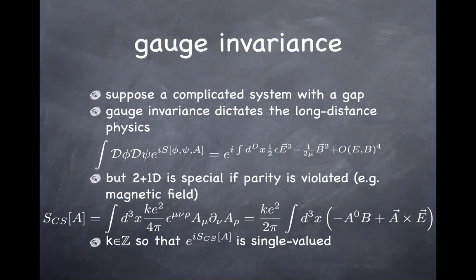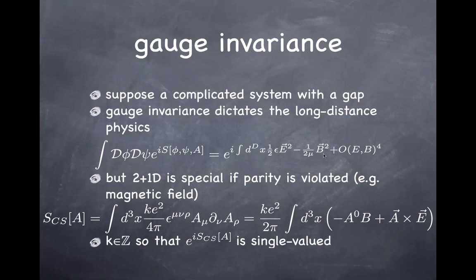Imagine you're looking at some complicated system and don't know exactly how to analyze it. We know gauge invariance is very important. So if you're looking at the property of a certain material at long distances, gauge invariance tells you that electromagnetism comes in only in the form of E-squared or B-squared. If the system also exhibits magnetism, you might have a coupling of the magnetic field to the magnetization, but you can start writing these terms in the effective action when you integrate the complicated system out.